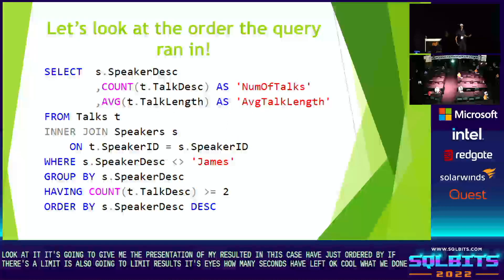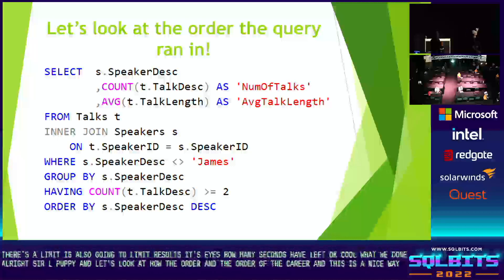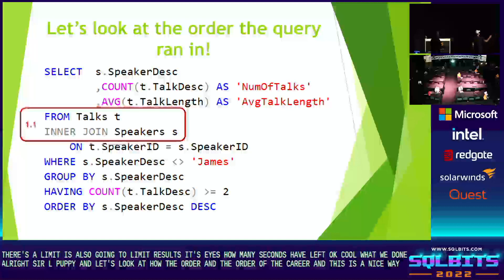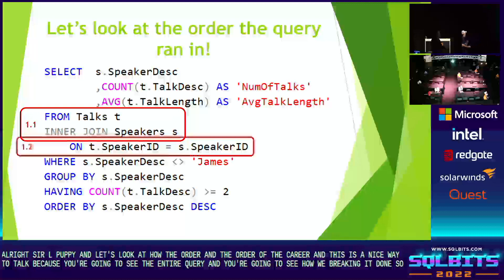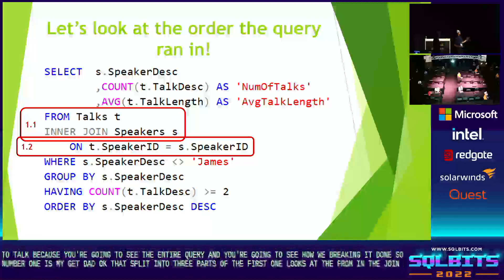Let's wrap up by looking at how the order of the query ran. Number one is GET DATA — split into three parts: first, it looks at FROM and JOIN; second, it looks at the ON predicate.